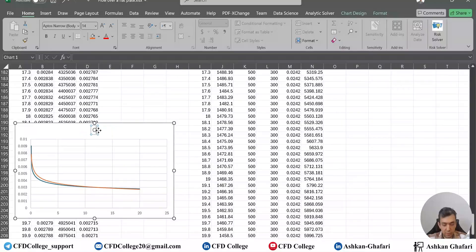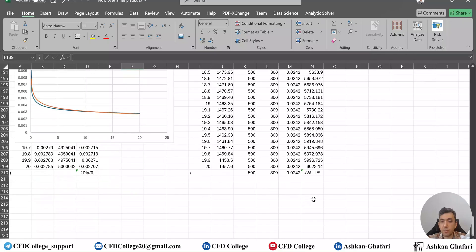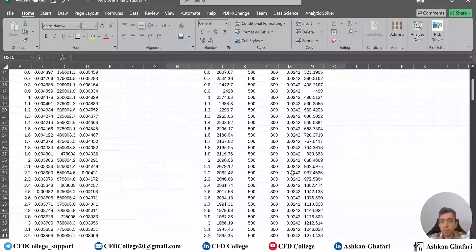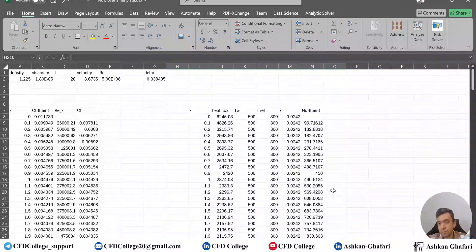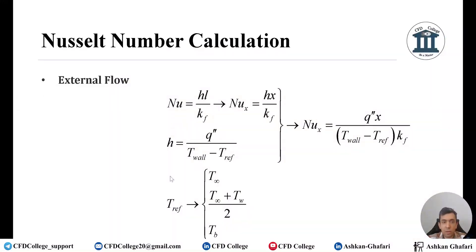So this is the Nusselt number. This is c_f skin friction coefficient, it's from our previous video. So if you haven't seen that, if you haven't watched that please go and watch those videos which are about the simulation of the flow over a flat plate.